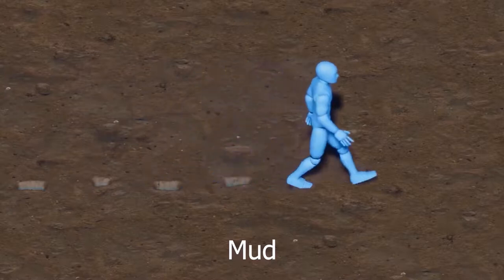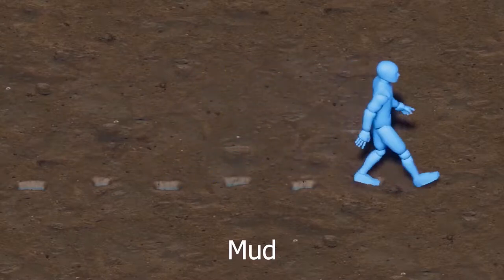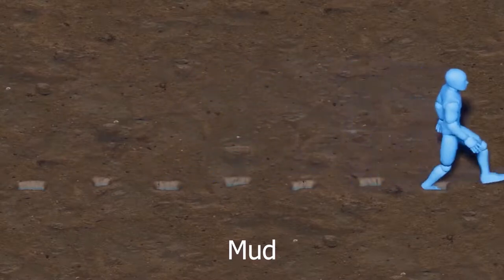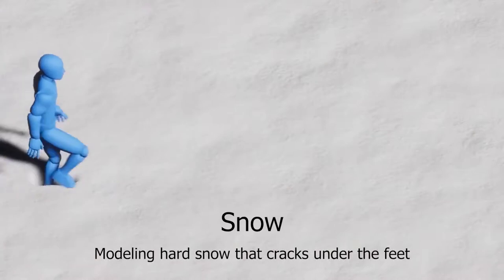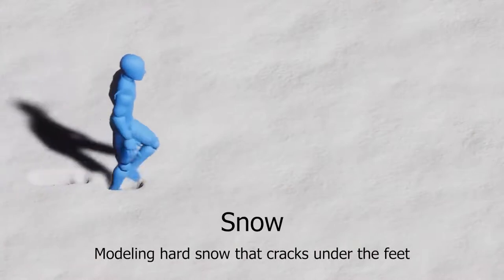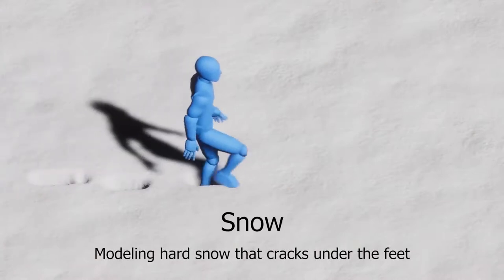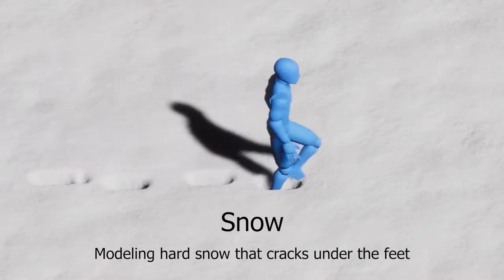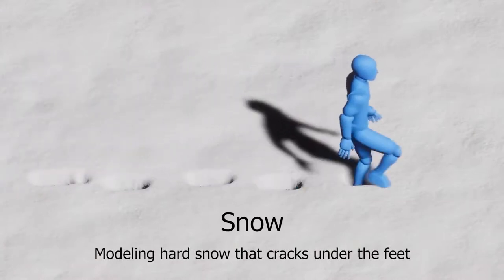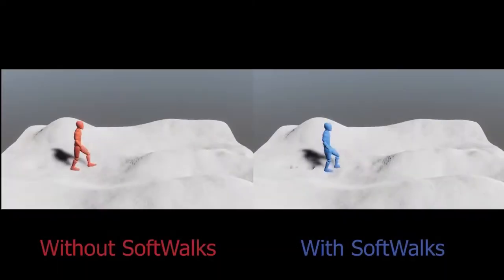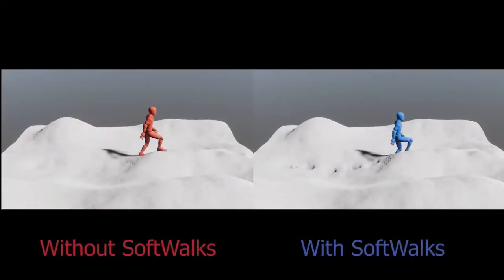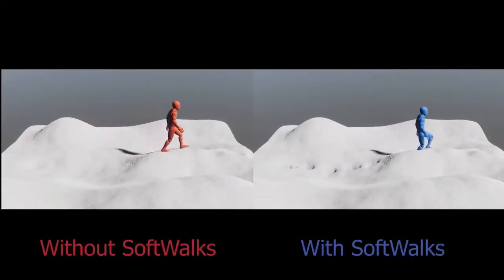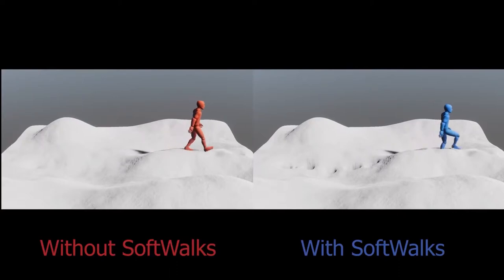For materials with a larger amount of water, such as mud or snow, we can generate deeper and sharper footprints by increasing both depth and compression coefficients. At the same time, the gait of the character adapts automatically based on the terrain and the deformations being generated.